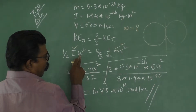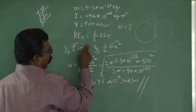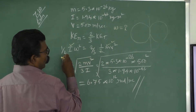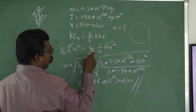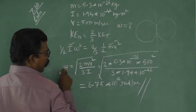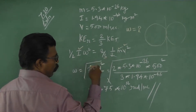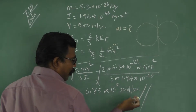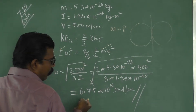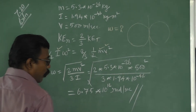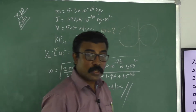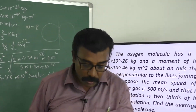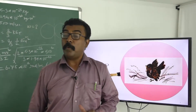So omega squared equals (2/3)mv²/I — the factors of two cancel. Therefore omega equals the square root of that expression. Substituting the values, you will get omega = 6.75×10¹² radians per second. That is the answer, and this is the method to approach problems of this kind.